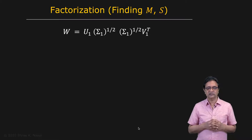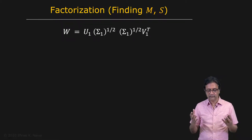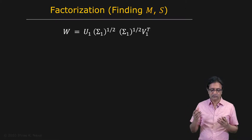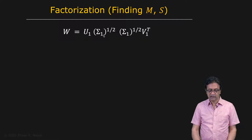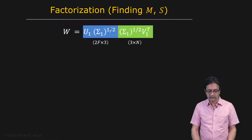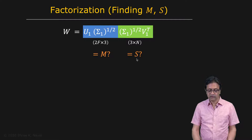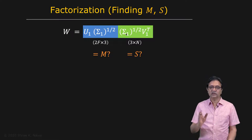Now let's talk about factorization. We have decomposed W into U1, sigma1, and V1. One approach is to split sigma1 by taking its square root and multiplying it with itself — splitting sigma1 into two equal pieces. This gives a factorization: a 2F by 3 matrix times a 3 by N matrix. One could say this might be the motion matrix and the structure matrix, but there's no reason to believe the equal split leads to a valid motion matrix and a valid structure matrix.